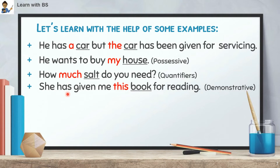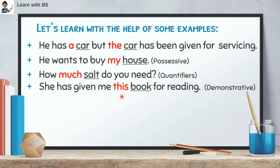Example 4: 'She has given me this book for reading.' In this sentence, 'book' is the noun. The word that comes before the noun is 'this'. So 'this' is a determiner. What type? It is a Demonstrative determiner, because it is pointing out the noun — 'this book'.